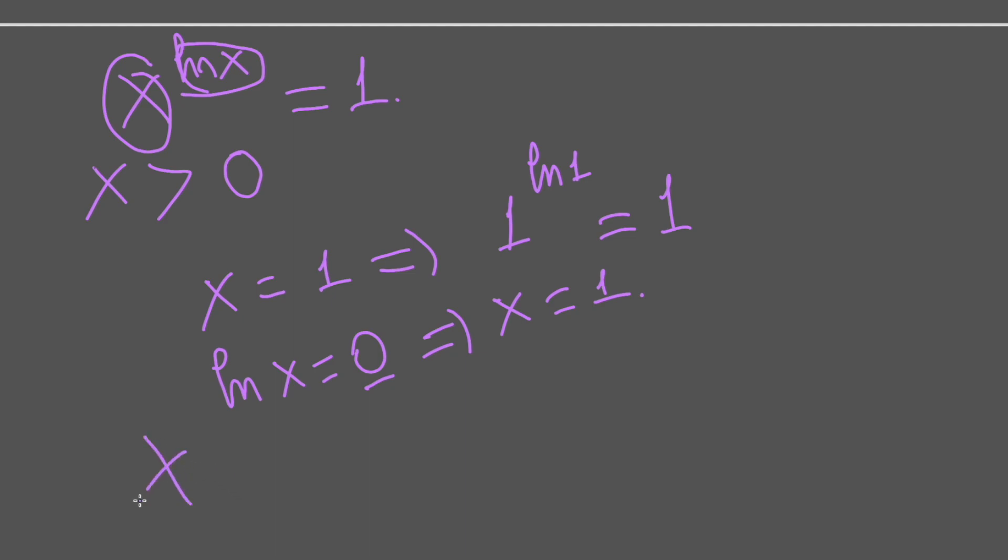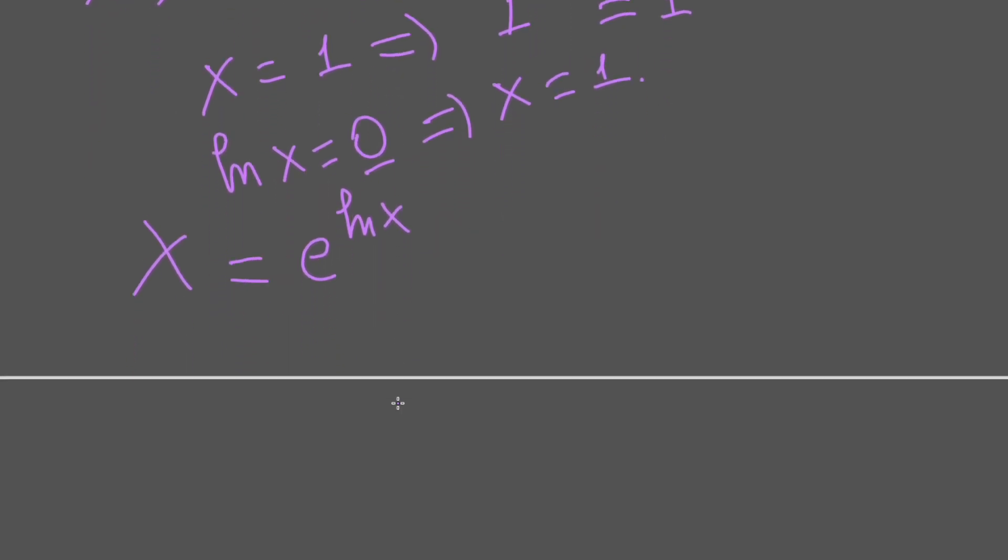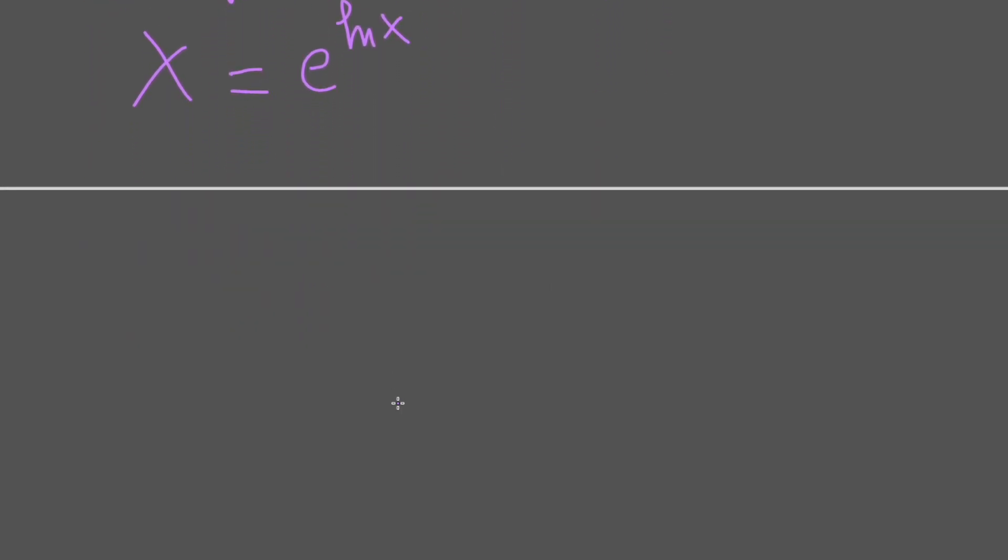We have x equals e to the power of ln x. So we apply this into the equation. The left side of the equation will have e to the power of ln x, raised to the power of ln x.